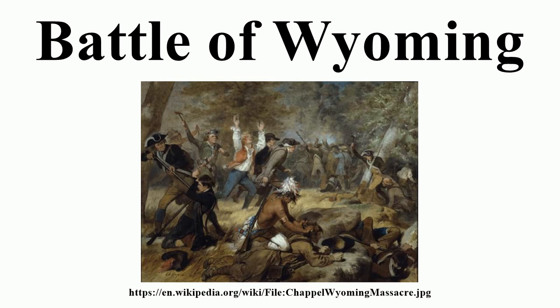The British forces arrived in the valley on June 30, having alerted the settlers to their approach by killing three men working at an unprotected grist mill on June 28. The next day Colonel Butler sent a surrender summons to the militia at Wintermute's Fort. Terms were arranged that the defenders, after surrendering the fort with all their arms and stores, would be released on the condition that they would not again bear arms during the war.